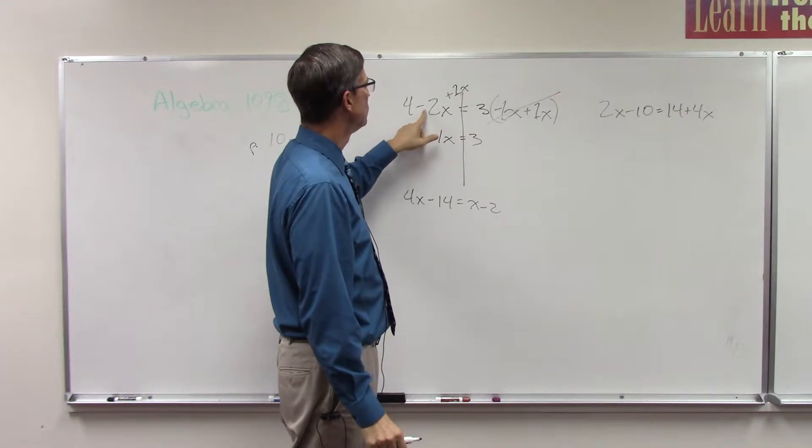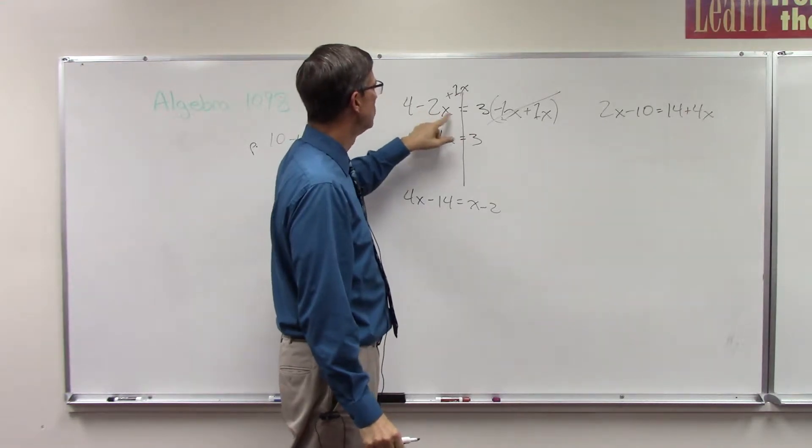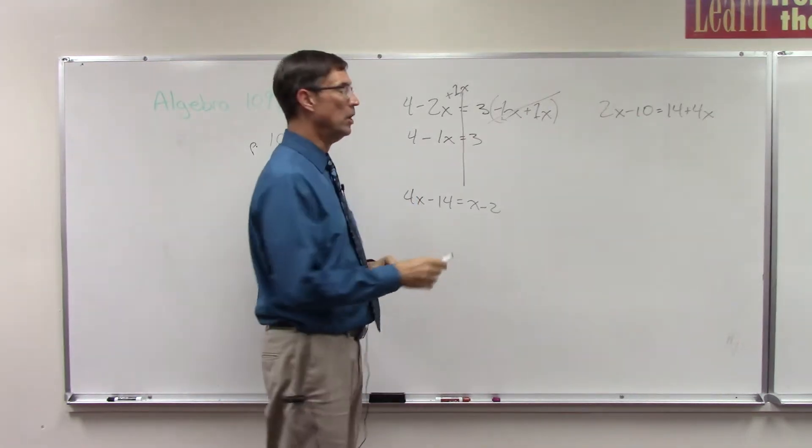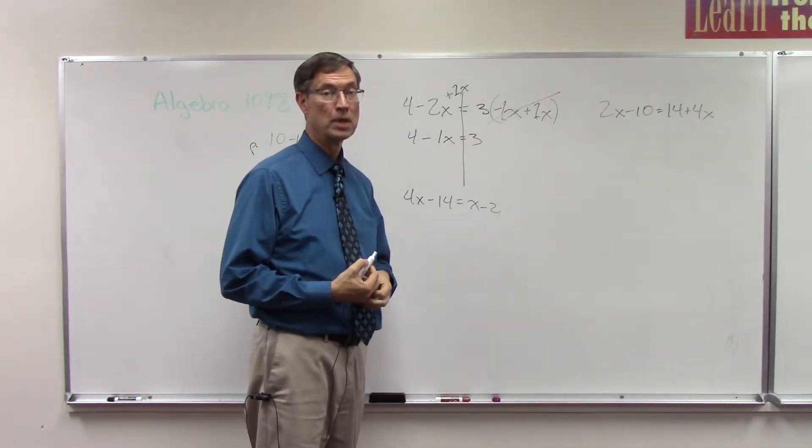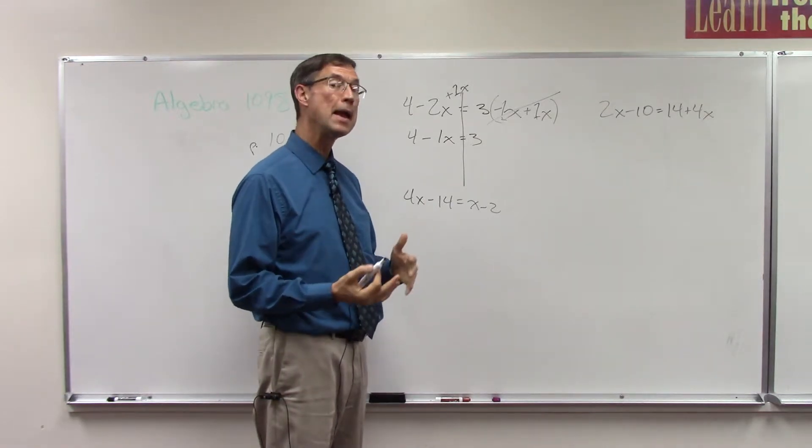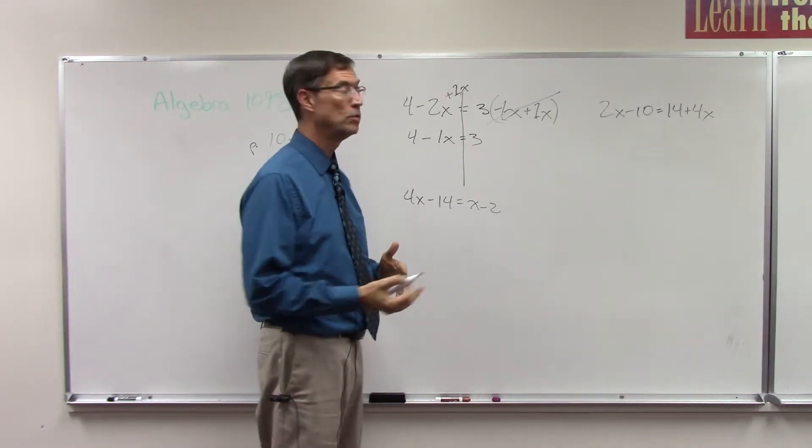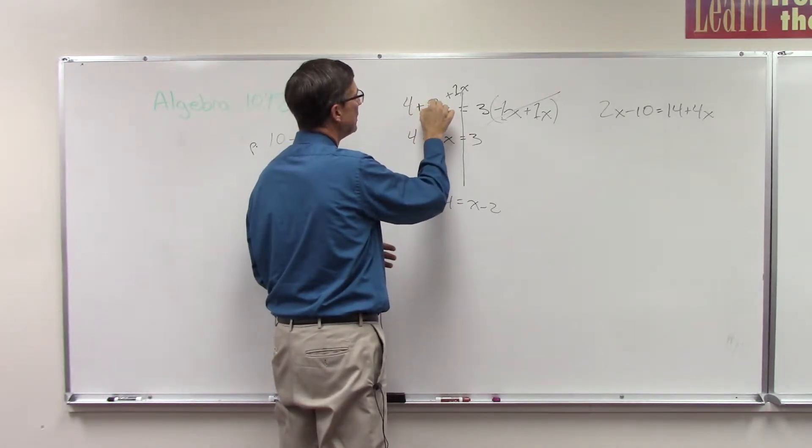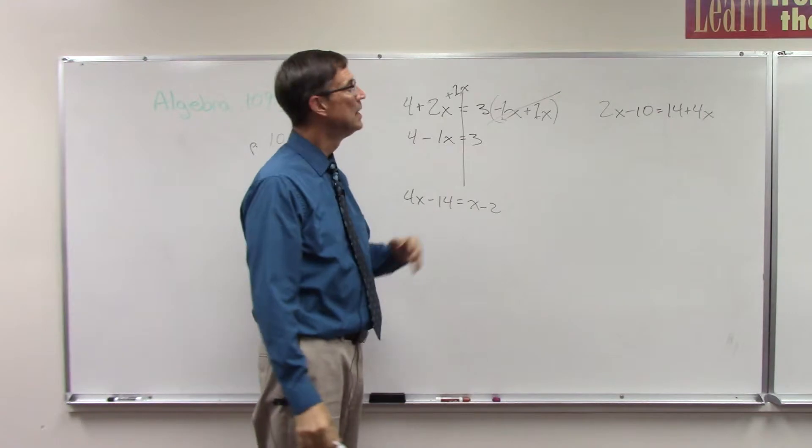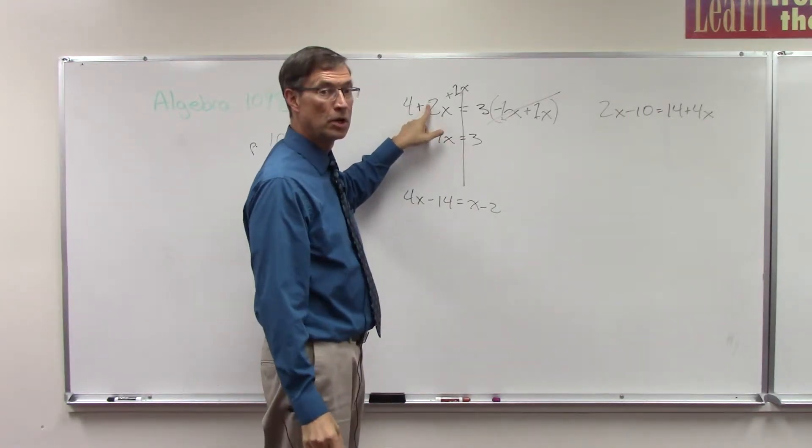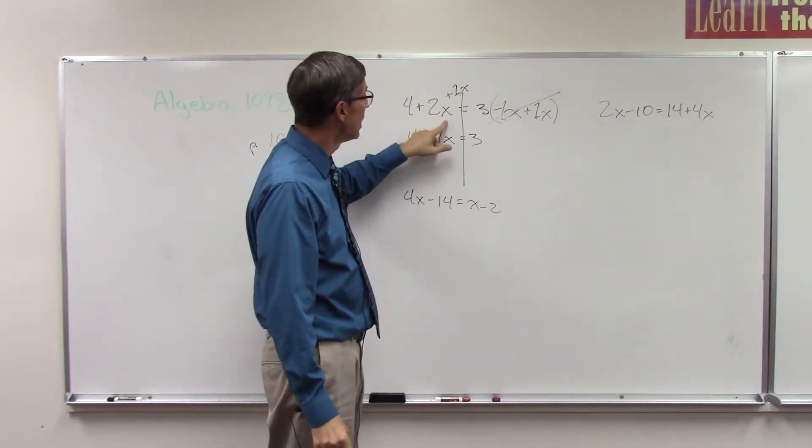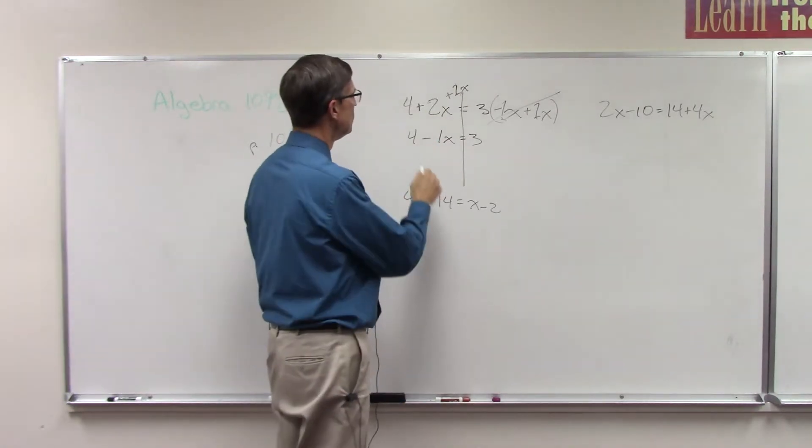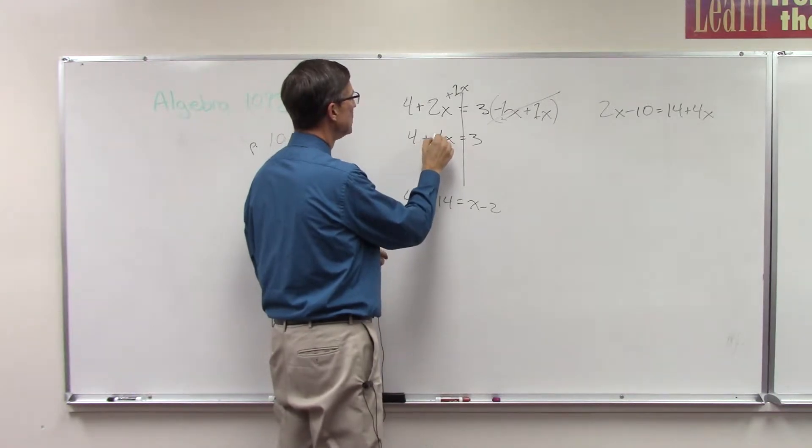If this confuses you—say, I thought that was minus 2X and you were tempted to add 2X plus 1X and get 3X—remember our rule for subtraction: we change subtraction to addition and change the second thing to its opposite. So I'm going to change this to positive and then I can make that a negative 2X. Now that is definitely the coefficient on X. Negative 2X plus positive 1X gives me negative 1X.